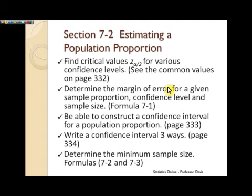Then we want to be able to determine the margin of error for a given sample proportion. And there's formula 7.1 there that shows you how to do that. We simply need the sample size, the confidence level, and we also need the sample proportion p hat, p with a little wedge over top of it. And then from that we can compute the margin of error. In other words, that's the maximum amount that we want to be off by.